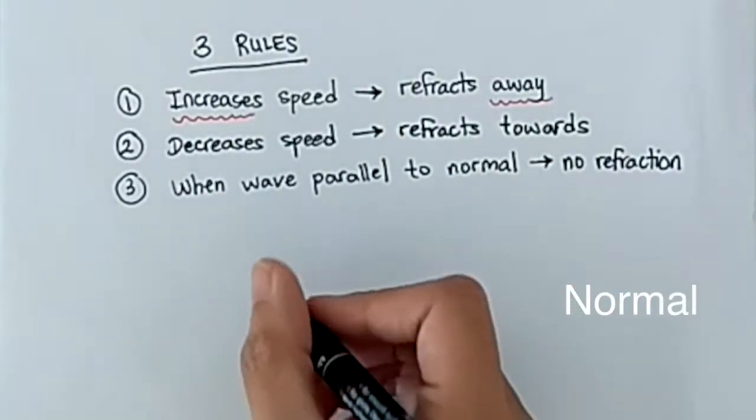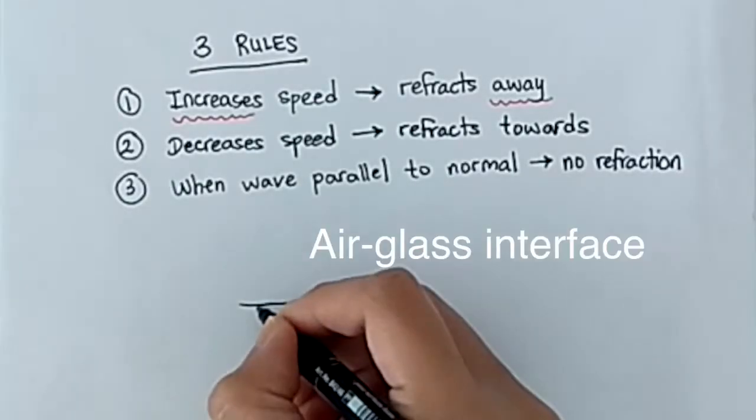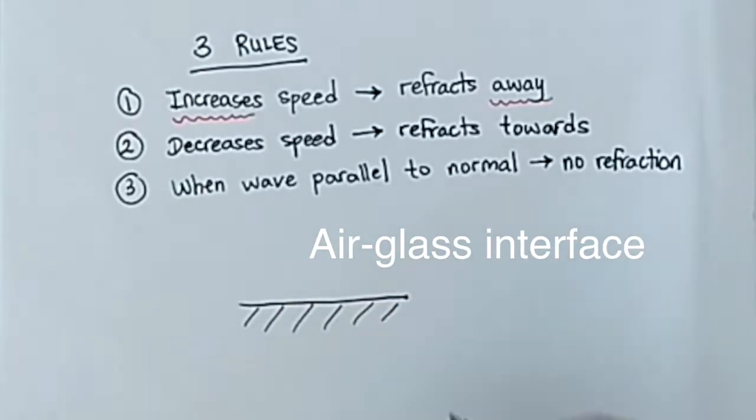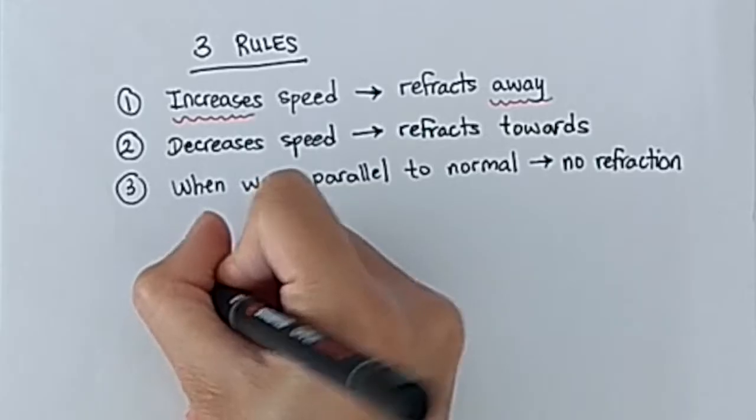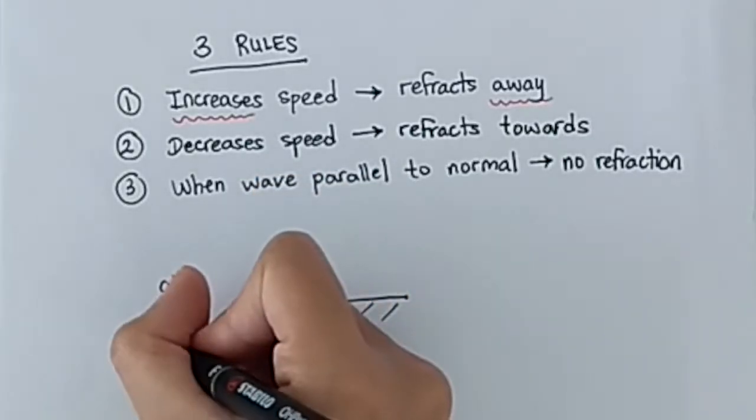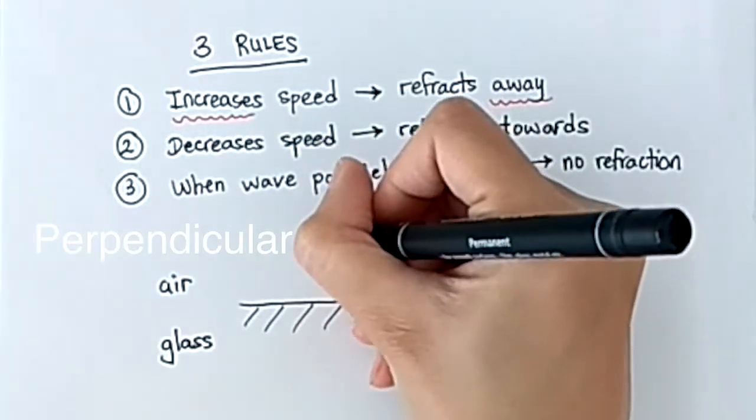Let's remind us what a normal is. I'm going to draw an air-glass interface, which means that my piece of glass is simply sitting beneath some air. The normal is going to be a line that is perpendicular to the surface of the glass.